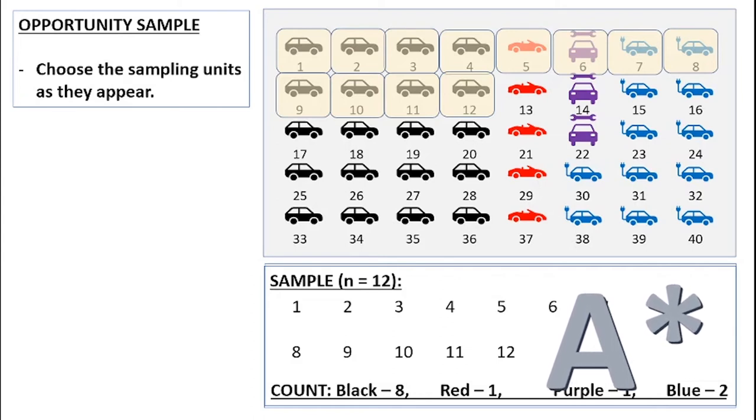Yes, there were more black cars than any other, but not in the proportion that we have. We have eight times as many black cars as red cars and that's not true of the population. We have four times as many black cars as blue cars and that's not true of the population either. So actually black cars here are over-represented in my sample. But that's what happens with opportunity sample. We just take whatever comes up in front of us.